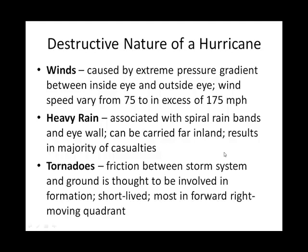Tornadoes can also be embedded in those spiral arms. The inside of the eye is calm, but the eye is surrounded by what we call the eye wall — and those are all thunderstorms, and thunderstorms can spawn tornadoes. So we have tornadoes in the eye wall and also in the spiral rain bands. What they've found is that we have the most tornadoes in the forward, right-moving quadrant.